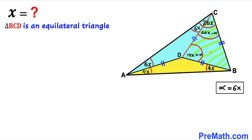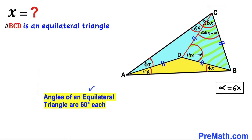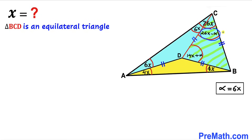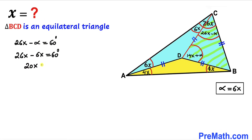Now for the final step, let's focus on triangle BCD. Since BC equals BD (given), and we just found AD equals CD while AD equals BD, all three sides of triangle BCD are congruent — it is equilateral. Since all angles of an equilateral triangle are 60 degrees, we set 26x minus alpha equal to 60 degrees. Substituting alpha equals 6x gives 20x equals 60 degrees, so x equals 3 degrees.